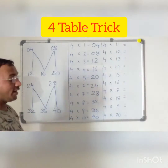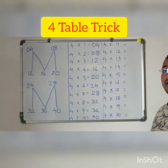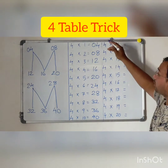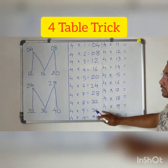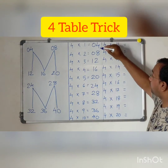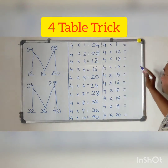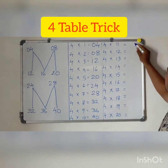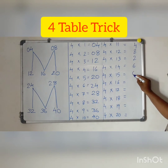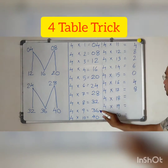Now let us complete the next 10 steps of the 4 times table using the first steps. For this, I am going to take the units digits of the first 10 steps into the second 10 steps and write them here. The pattern is: 4, 8, 2, 6, 0 and 4, 8, 2, 6, 0. In the next 10 steps, writing the units digits as: 4, 8, 2, 6, 0 and 4, 8, 2, 6, 0.